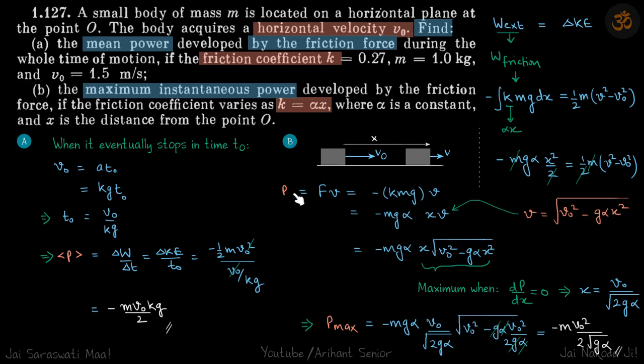The velocity when it has traveled distance x we can find from energy. Total work done externally equals change in kinetic energy. Work done external here is only due to friction: minus kmg·dx when it travels a small distance dx, where k is αx, with limits from 0 to x. The negative sign is because displacement dx and friction are in opposite directions. We'll integrate this small work done to find total work done by friction equals change in kinetic energy.